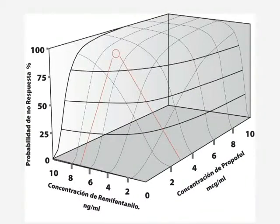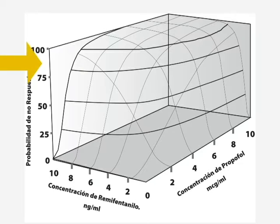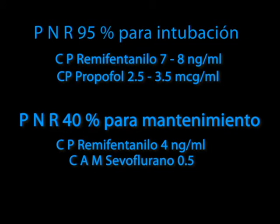The flight plan is the identification of the different moments of the intervention, followed by the selection of the appropriate probability of no response for each one. In this case, a probability of no response of 95% for intubation is required, reached with remifentanyl of 7–8 nanograms per milliliter and propofol of 2.5–3.5 micrograms per milliliter, and a probability of no response of 40% for maintenance, reached with remifentanyl of 4 nanograms per milliliter and sevoflurane minimal alveolar concentration of 0.5.